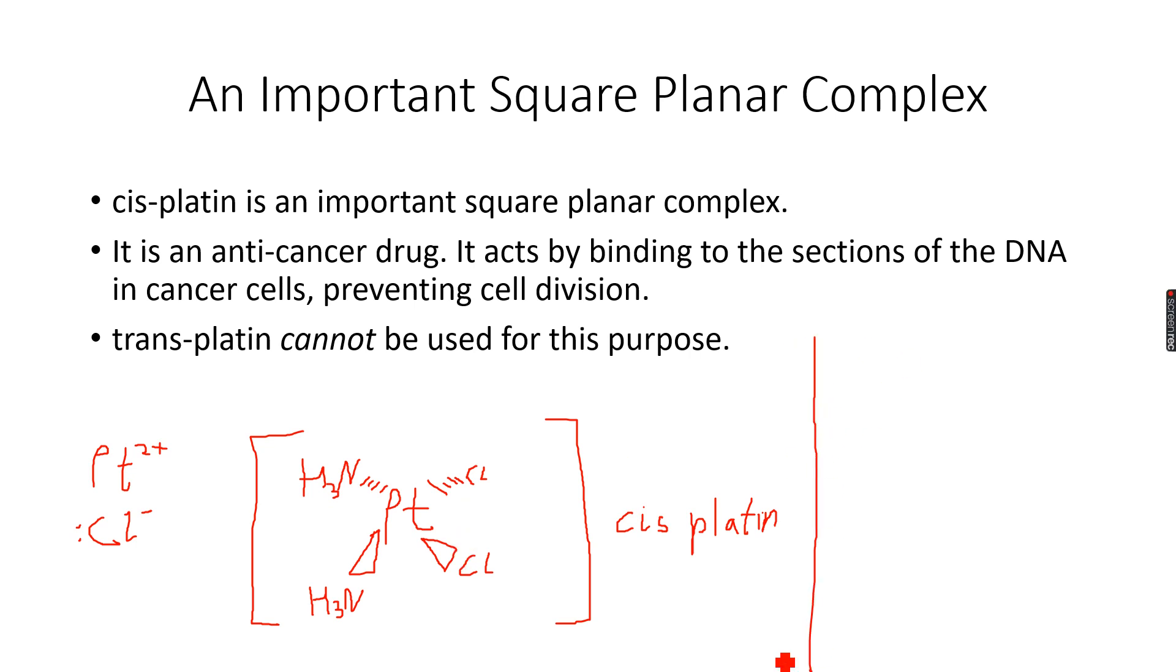This is cisplatin, we also have something called transplatin. It is Pt, I think you can figure this out on your own, I'm just making it for you. We have H3N and we have NH3 because it's opposite, trans, it's trans. So it's opposite, you have Cl, you have Cl.